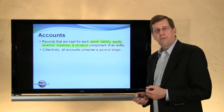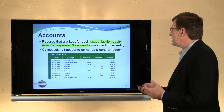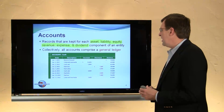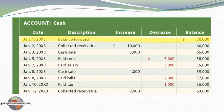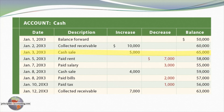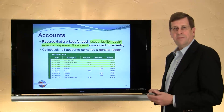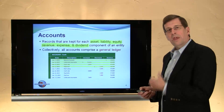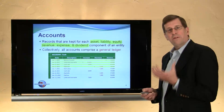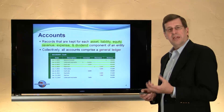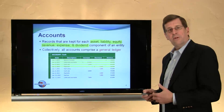Collectively, all the accounts are said to comprise the general ledger. Here I'm showing cash as a representative example of a ledger-type account. The beginning balance on January 1 was $50,000. On January 2, we collected $10,000 from a customer, causing an increase in cash to a $60,000 balance. On January 3, we had a cash sale transaction, further increasing cash to $65,000. On January 5, we had a $7,000 payment for rent, causing cash to decrease to $58,000. You would have a similar general ledger account for each element of the company's financial statement, such as accounts receivable, inventory, accounts payable, and so forth.